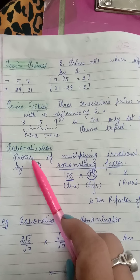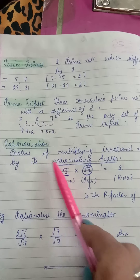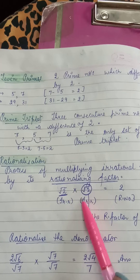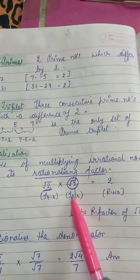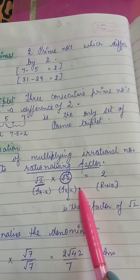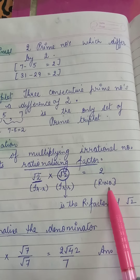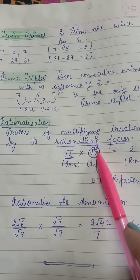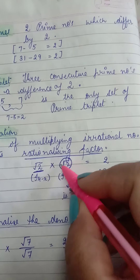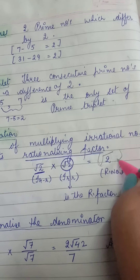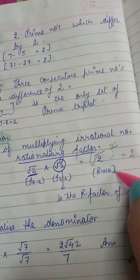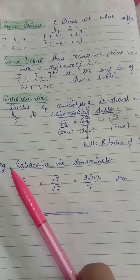Rationalization is the process of multiplying an irrational number by its rationalizing factor to obtain a rational number. For example, take the irrational number root 2. Multiply it by root 2 (the rationalizing factor) and you get root 2 squared, which equals 2 — a rational number. The square and square root on the same number cancel each other out, leaving us with the rational number 2.